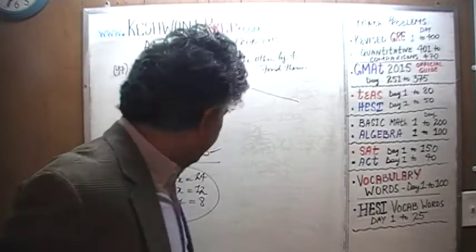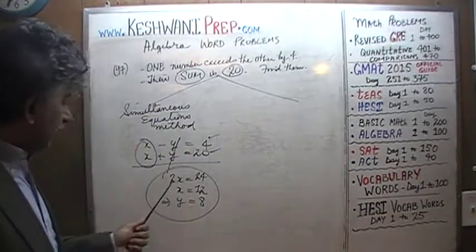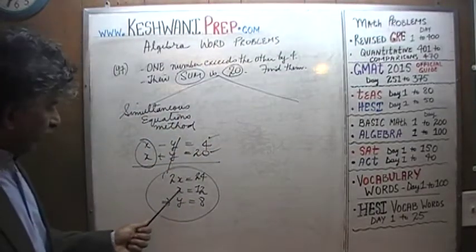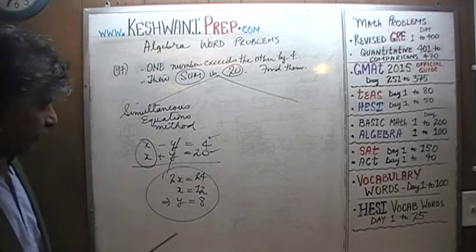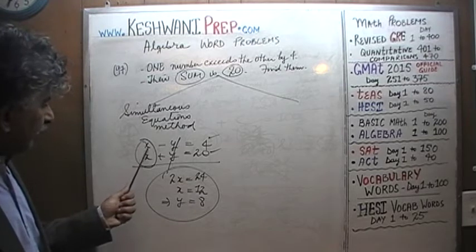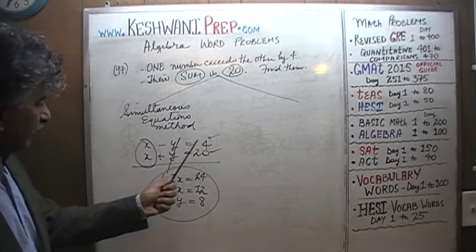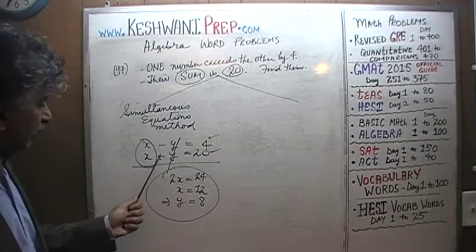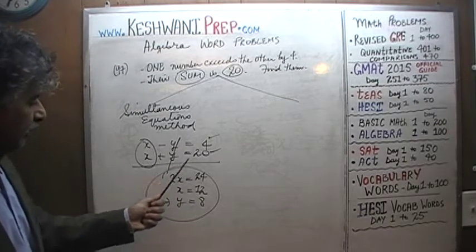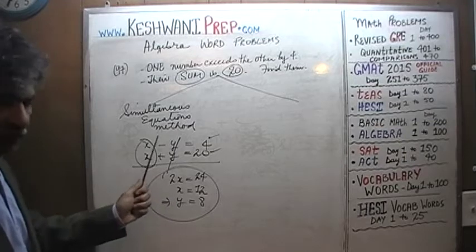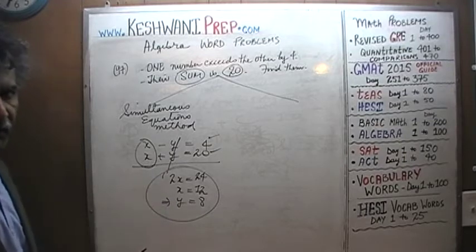As you can see, x equals 12 and y equals 8. We can verify: 12 minus 8 equals 4, and 12 plus 8 equals 20. It satisfies both equations at the same time.